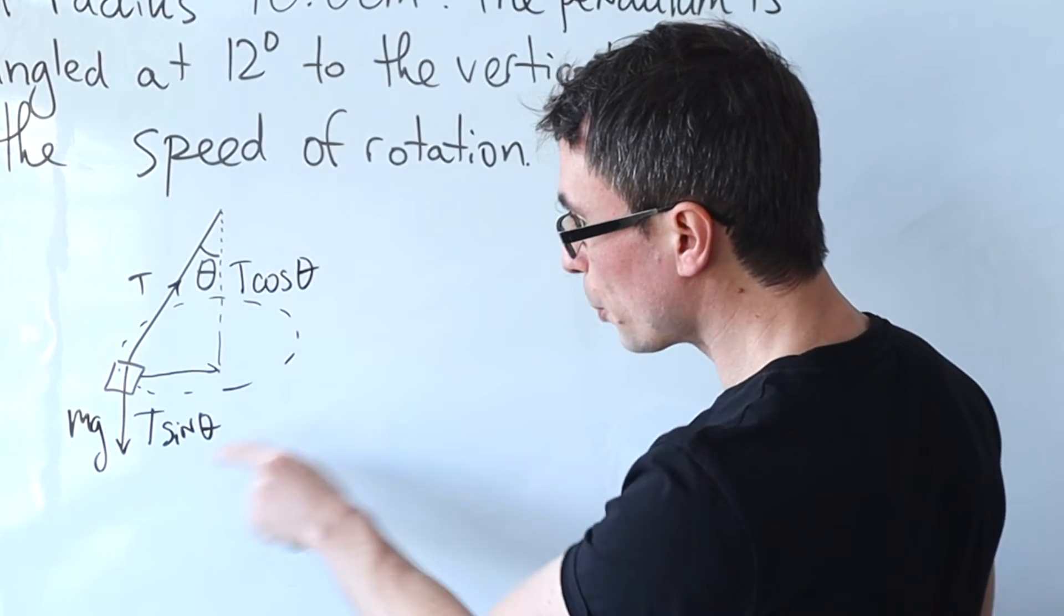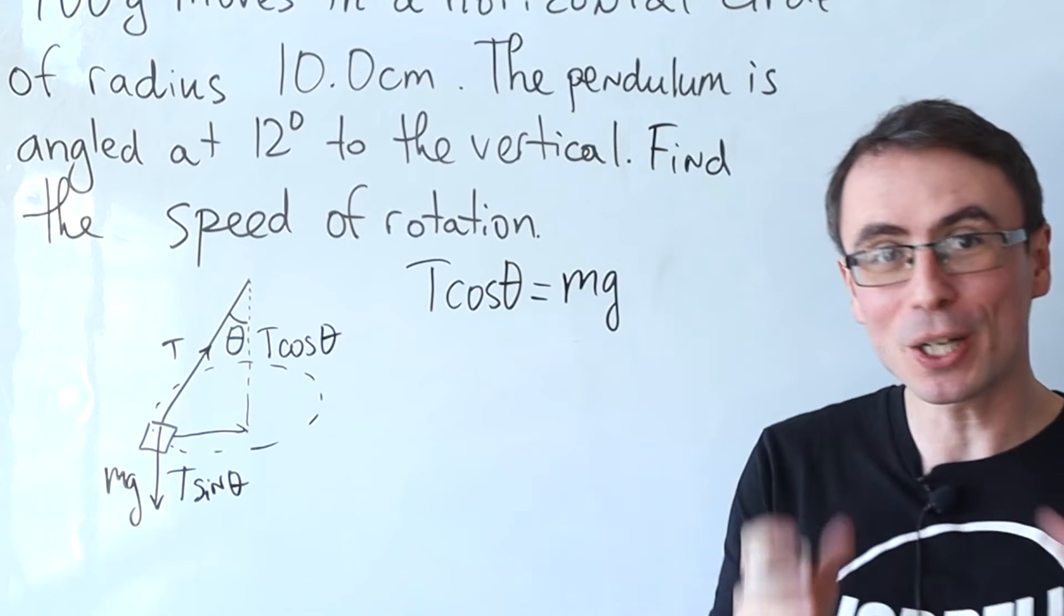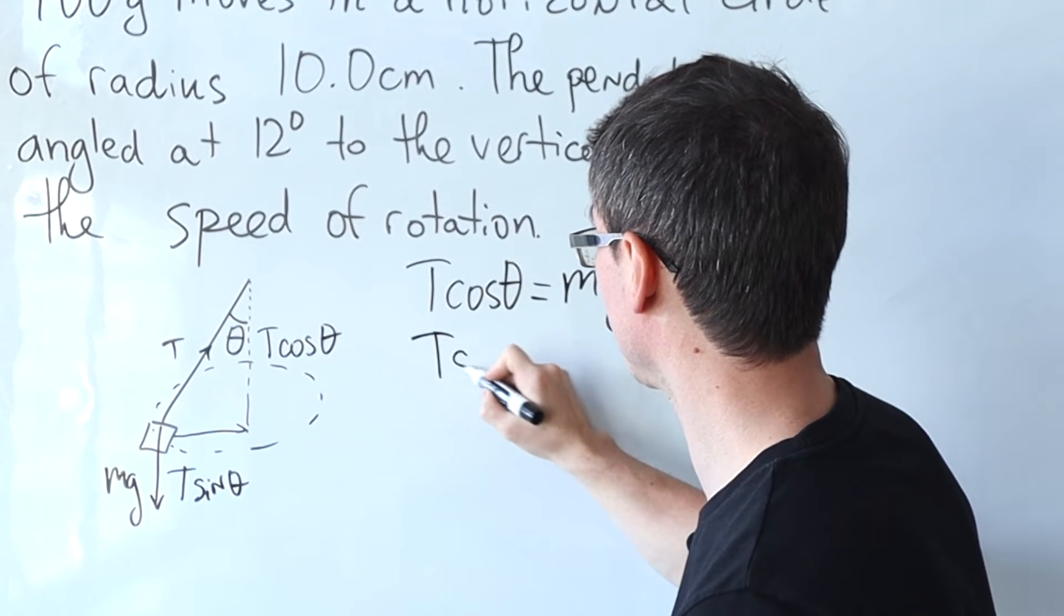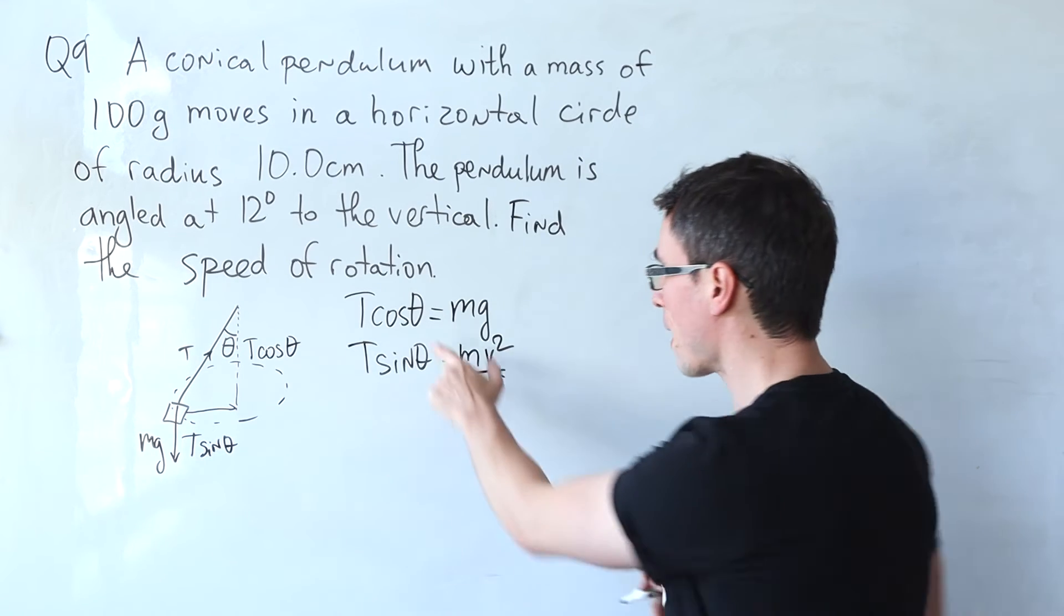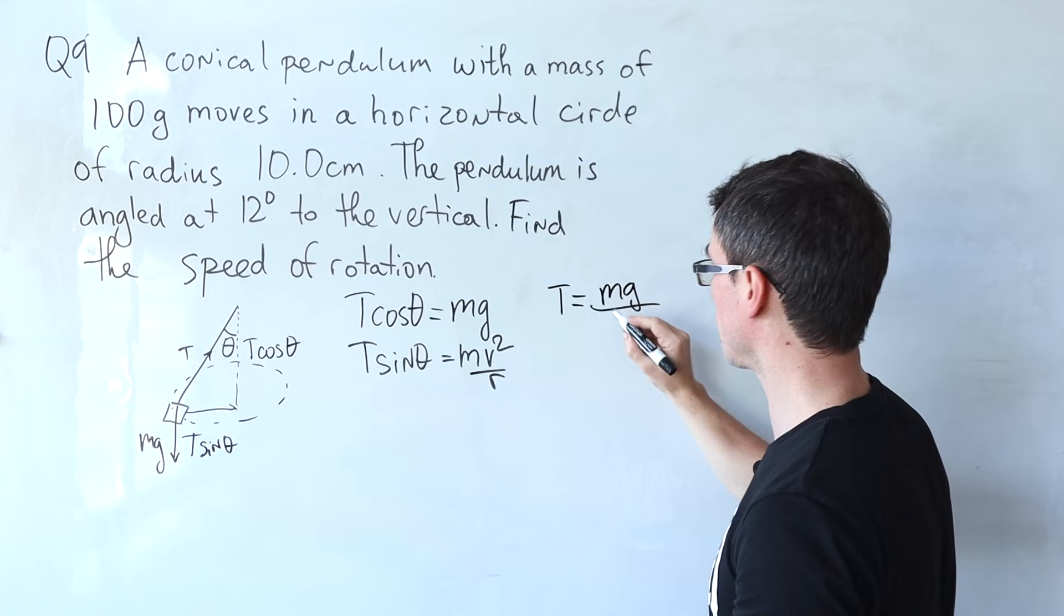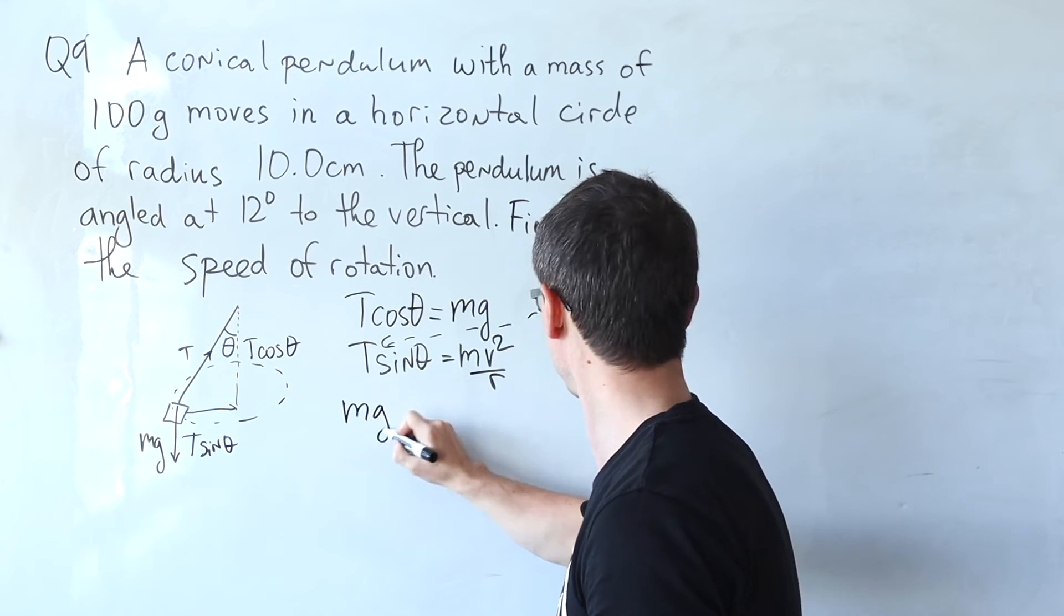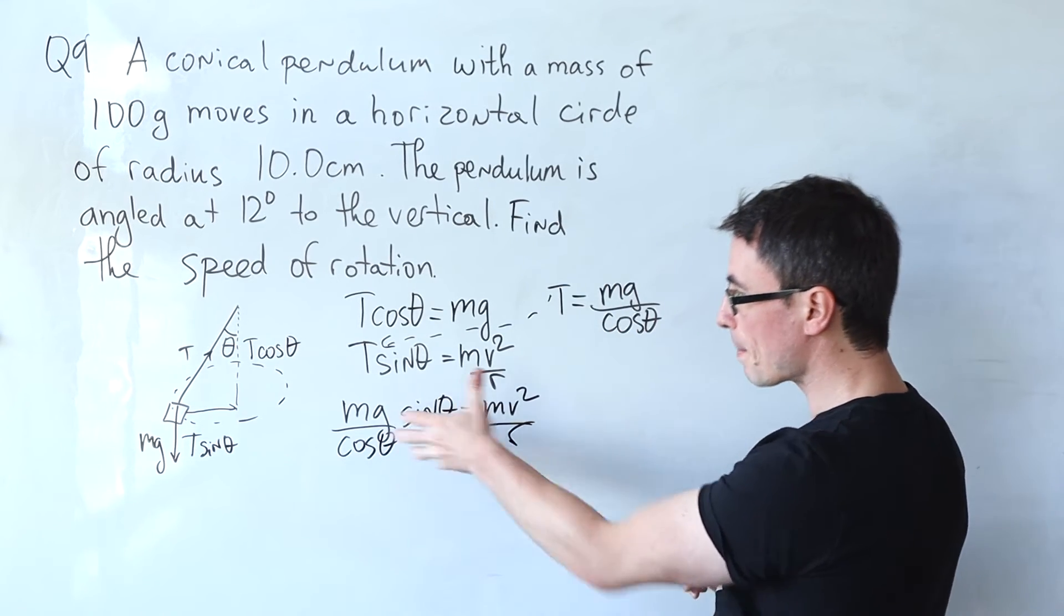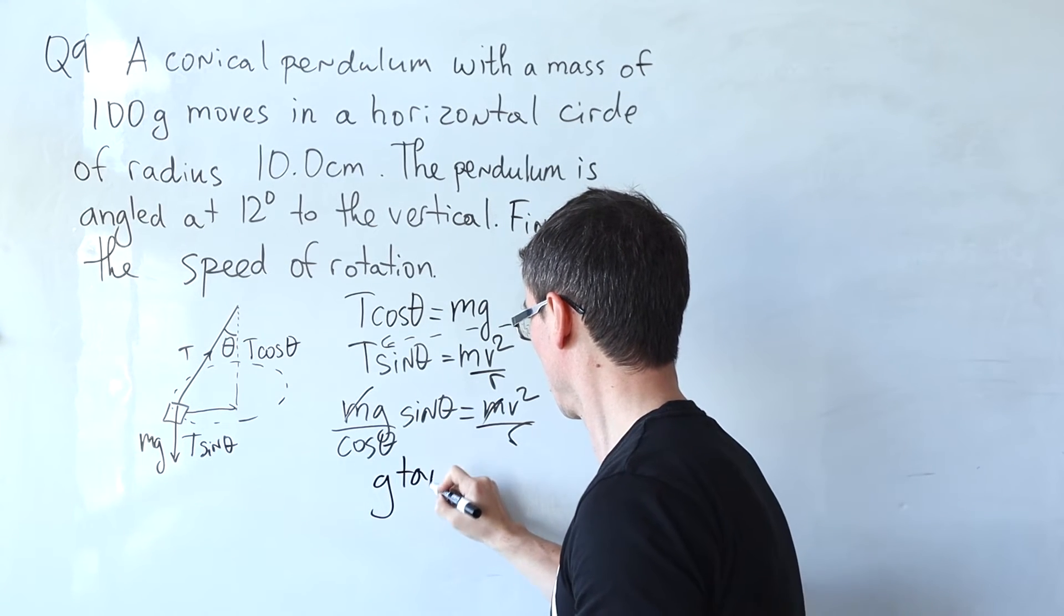If the pendulum is moving in a purely horizontal circle then we know that t cos theta equals mg, and because it's moving in a circle then the horizontal component will be providing the centripetal force so t sin theta equals mv squared divided by r. Let's do a little bit of mathematical trickery. I'm going to rearrange the first equation for t, so t equals mg divided by cos theta. Then I'm going to plug this into this equation: mg over cos theta times sin theta equals mv squared over r. Look at this, the mass cancels out so the speed will be independent of the mass. We have g sin over cos which is tan theta equals v squared over r. Rearranging for v squared, we get v squared equals gr tan theta.